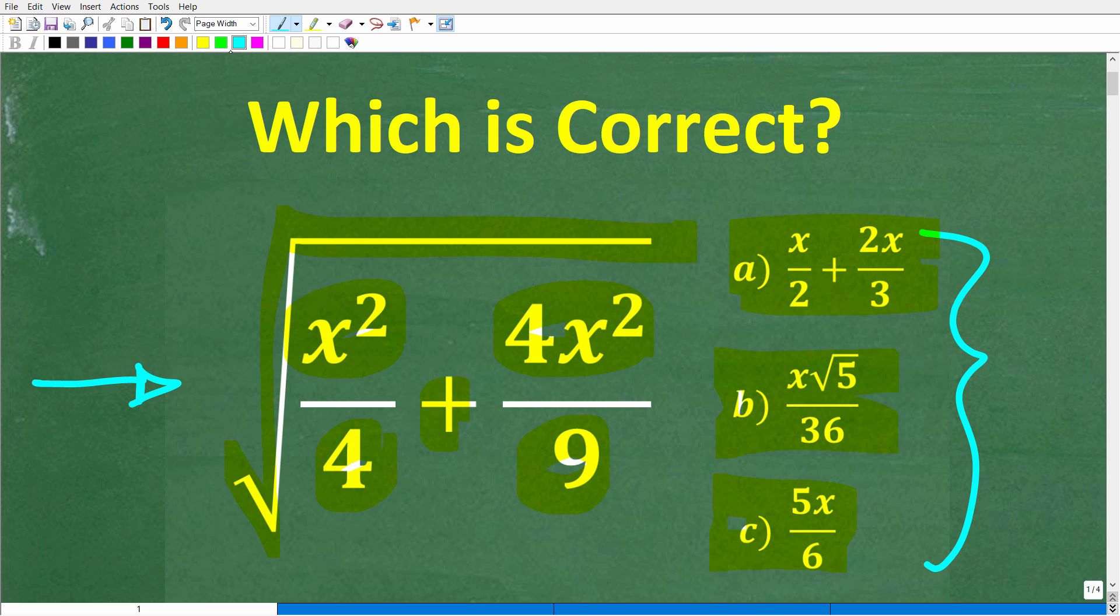B is x times the square root of 5 over 36. And C is 5x over 6. Now if you can figure this out, put your answer in the comment section. I'll show you the correct answer in just one second. Then I'll walk through exactly how to solve this problem step by step. Even if you don't know what to do, take a guess. You have a 1 out of 3 chance.